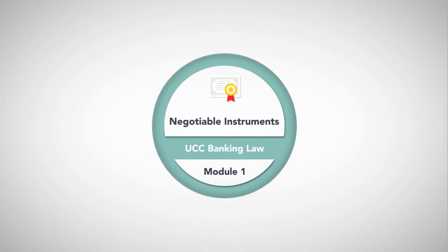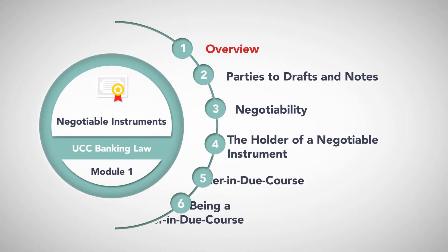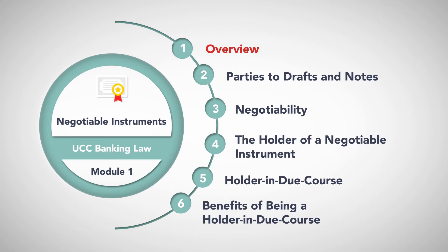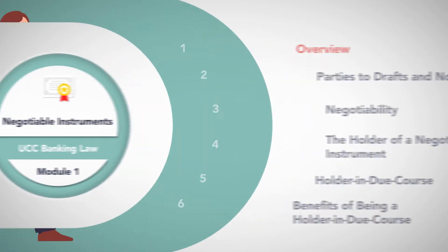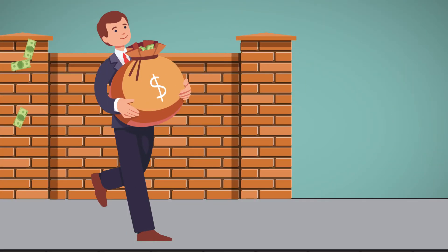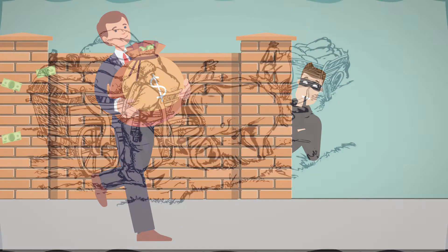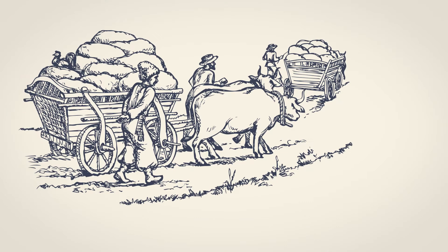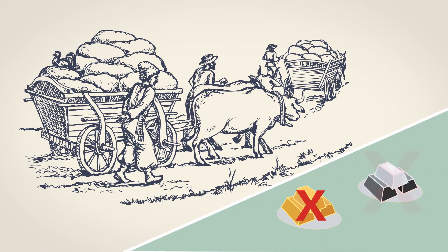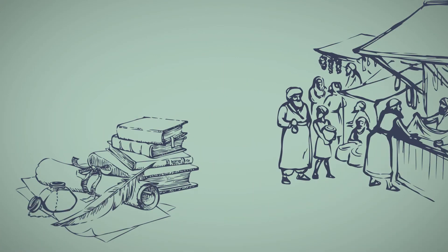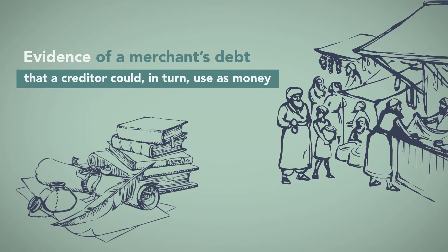Module 1: Negotiable Instruments. Overview. Traveling with a large amount of cash can be risky. In the early days of commerce, merchants did not want to carry gold and silver for fear of being robbed, so they started accepting paper as payment. This paper served as evidence of a merchant's debt that a creditor could, in turn, use as money.